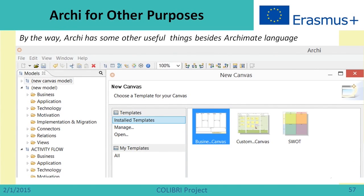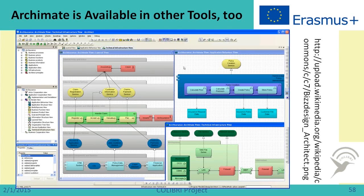One more thing about Archi is that there are other useful features. For example, a business model canvas is available, so if you want to make a canvas model, you can also use Archi for that. Archi is the tool, Archimate is the language, and Archimate is available not only in Archi. There are many more sophisticated and advanced tools which give an opportunity to work with this language, such as Bizagi and others.